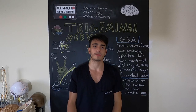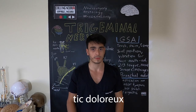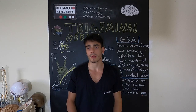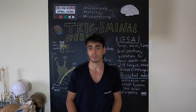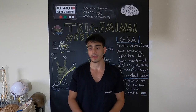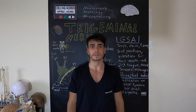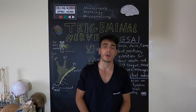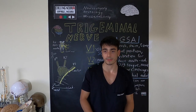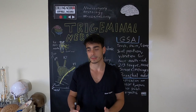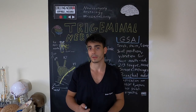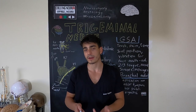Another clinical aspect is trigeminal neuralgia, or tic douloureux. It is characterized by recurrent paroxysms of sharp, stabbing pain in one or more branches of the nerve, usually V2 and V3 — V1 is rare. If the patient has trigeminal neuralgia, we should check for vascular compression of the root entry zone of the nerve, as an artery may be compressing the nerve root and causing this specific pattern of pain.